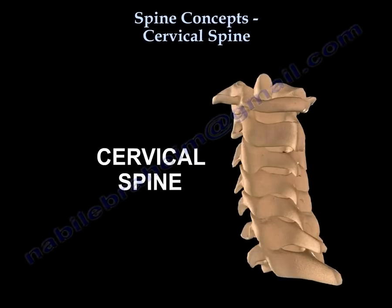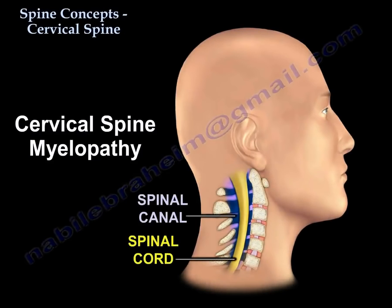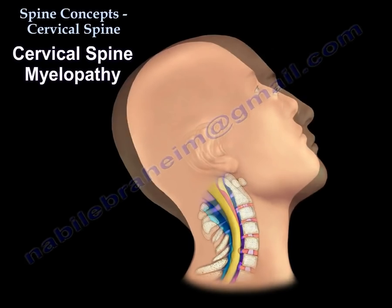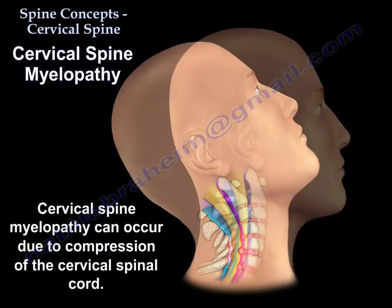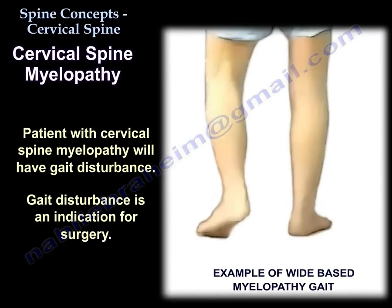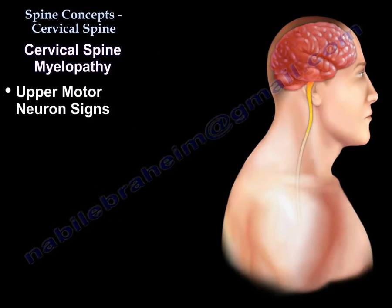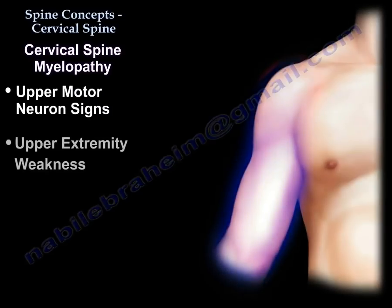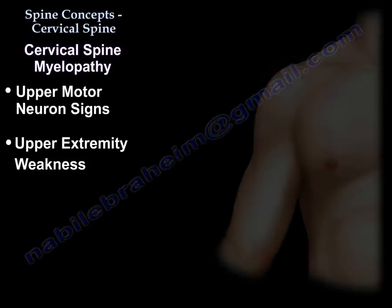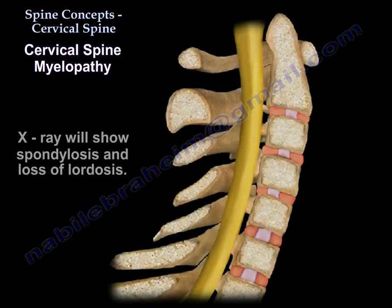Spine concept: cervical spine. We will start with cervical myelopathy. You will have gait disturbance — gait disturbance means myelopathy, and once you have gait disturbance this is an indication for surgery. You will also have upper motor neuron signs, upper extremity weakness, and the hands are clumsy. The x-ray will show spondylosis and loss of lordosis.